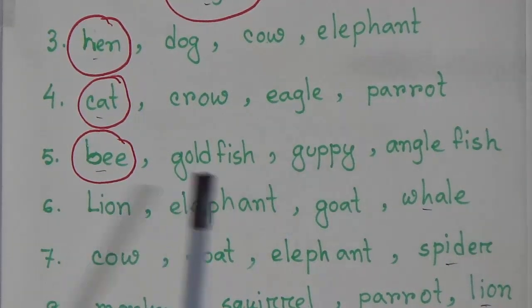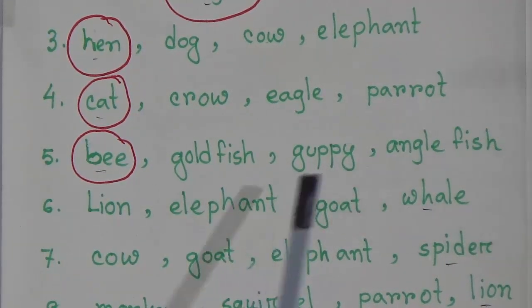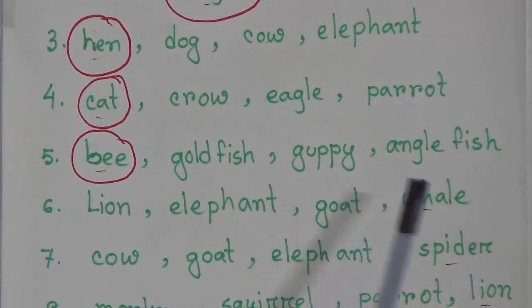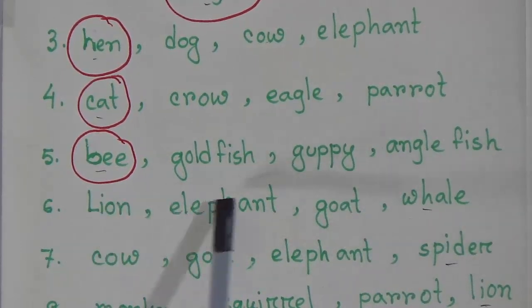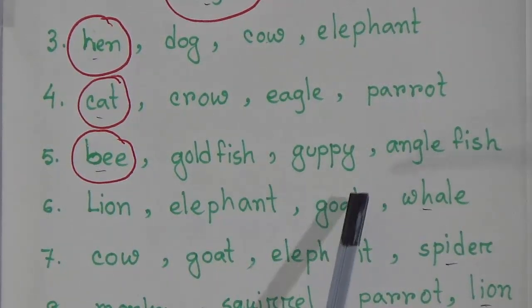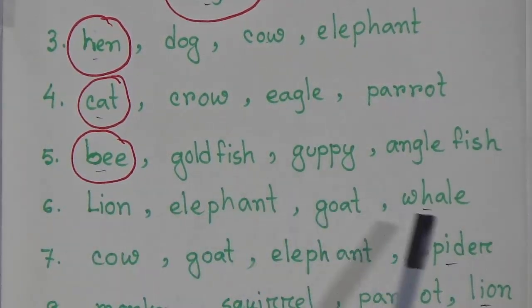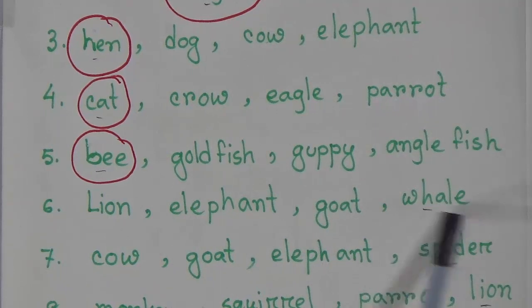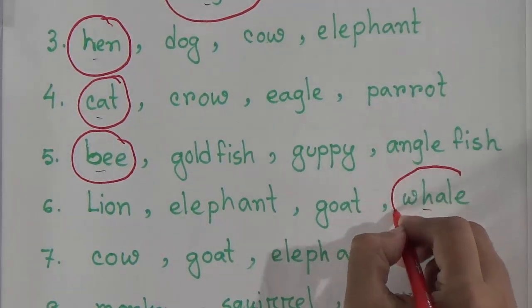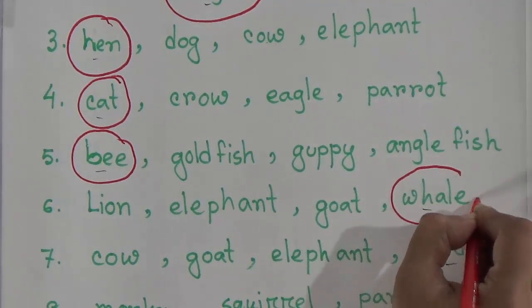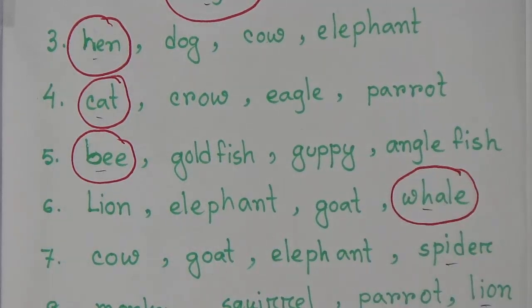Our sixth odd one out is: lion, elephant, goat, whale. Lion, elephant, and goat are land animals, but whale lives in water — it is a water animal. That is why whale is the odd one out here.